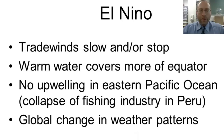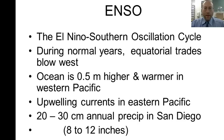To summarize for your notes: in an El Niño year, trade winds slow and/or stop; warm water covers more of the equator; there's no upwelling in the eastern Pacific, causing a collapse of the fishing industry in Peru; and there's a global change in weather patterns. ENSO stands for the El Niño Southern Oscillation Cycle. During normal years, equatorial trade winds blow west, the ocean is half a meter higher and warmer in the western Pacific, there are upwelling currents in the eastern Pacific, and there's 20 to 30 centimeters of annual precipitation in San Diego — that's 8 to 12 inches of rain.